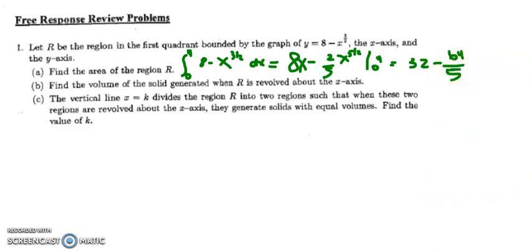That one's not too bad. Now we want to know the volume generated by revolving R around the x-axis. So that means I'm going to have a pi out in front, and I need to take the function 8 minus x to the 3 halves and I need to square it to give me my pi R squared. And again, my limits of integration are 0 to 4.